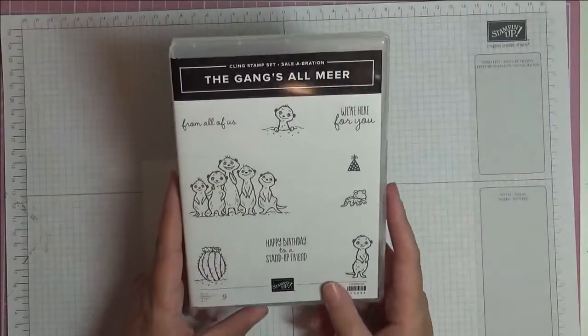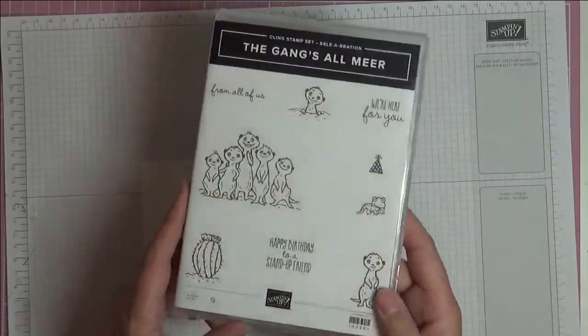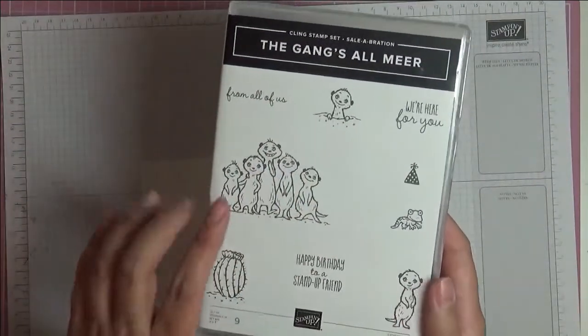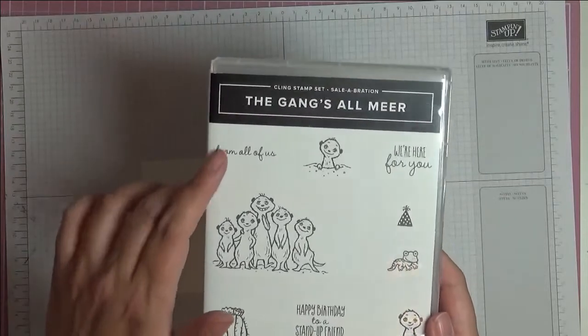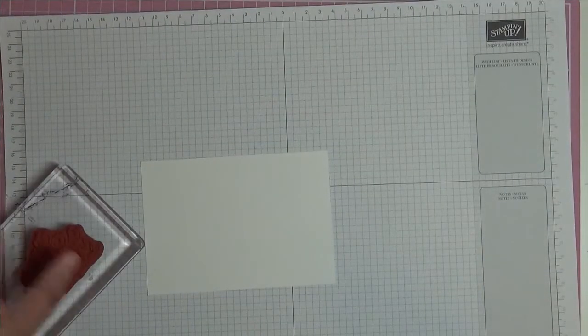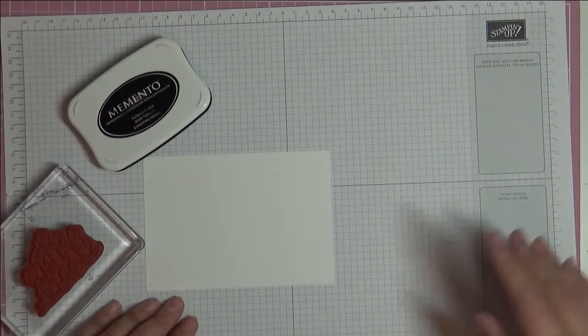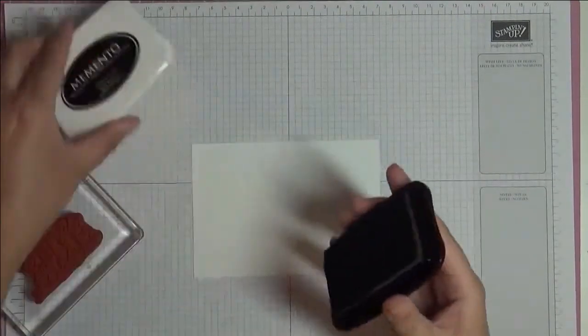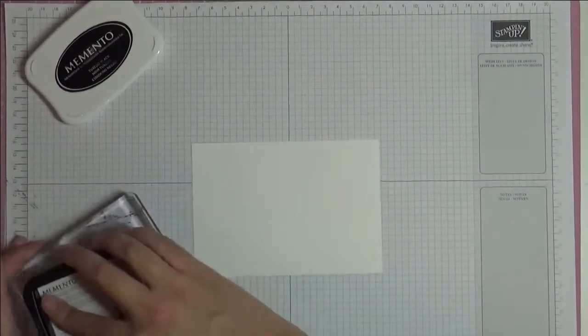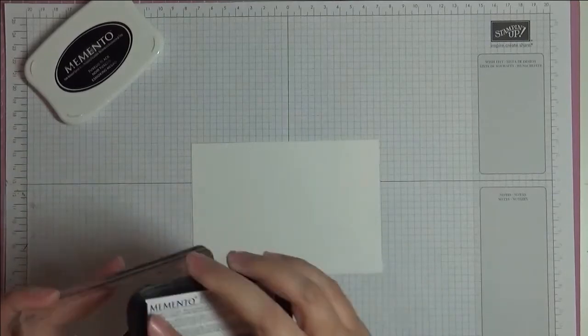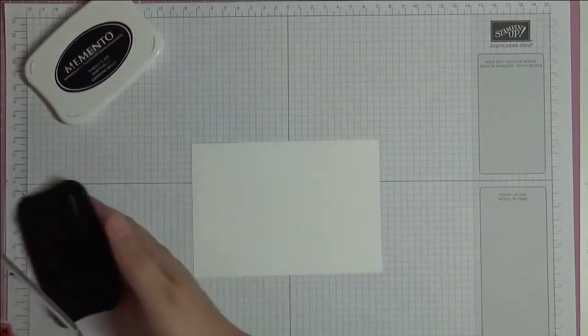The stamp set we're going to use is called Gangzol Mir, and we're going to be using these meerkats and the sentiment 'From All of Us'. Let's get started. We're going to be stamping with Memento because I'm going to be coloring with my Stampin' Blends. So I'm going to ink up our stamp set and stamp this big one of all the little meerkats together.